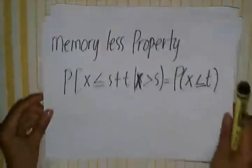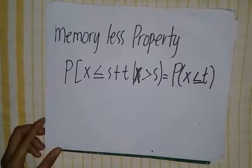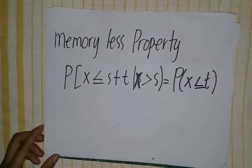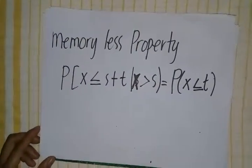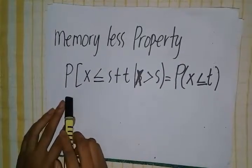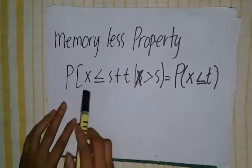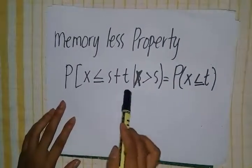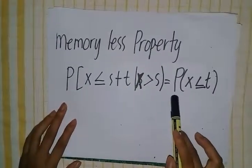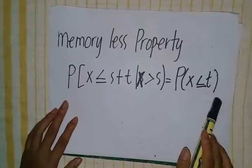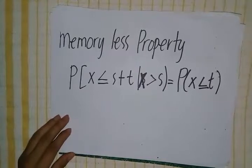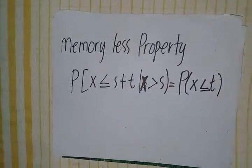Exponential distribution has what we call the memoryless property. This means the expected time until the next event is the same no matter how long since the last event occurred. The formula is: P(X ≤ s + t | X > s) = P(X ≤ t).